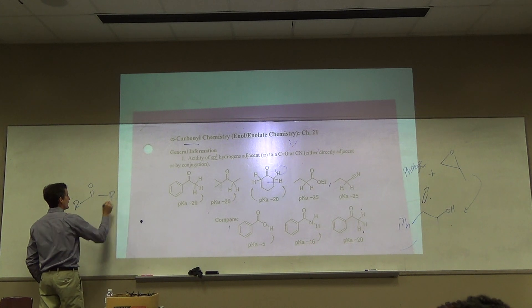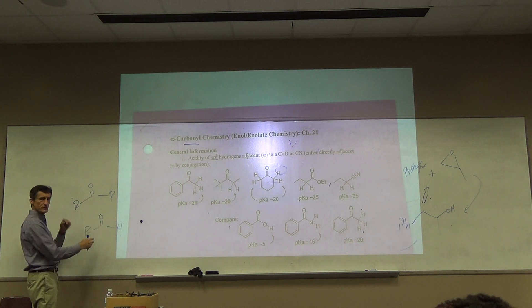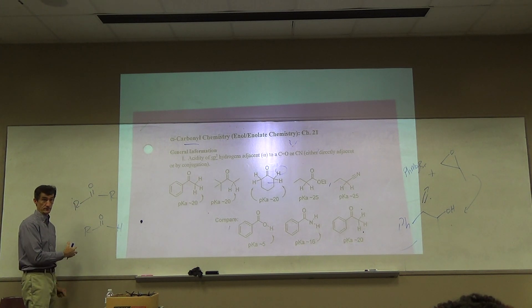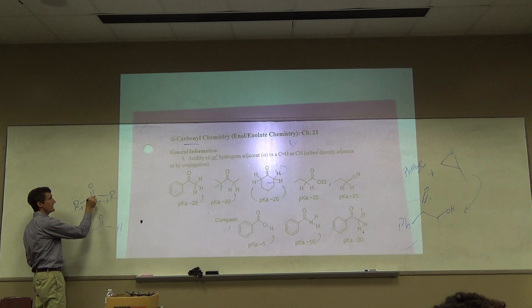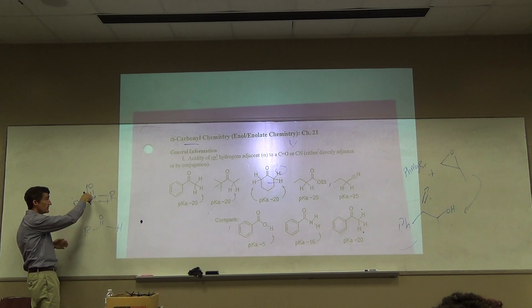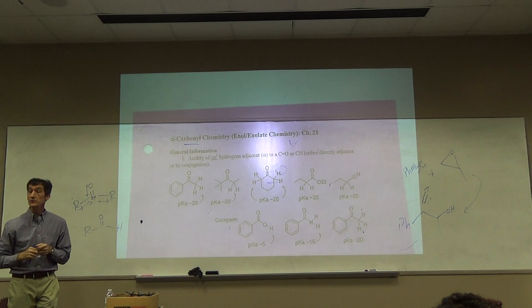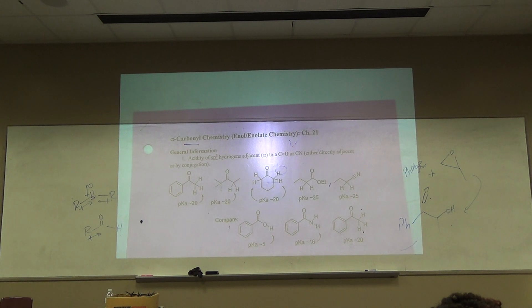Ketones are less reactive. Why is that? At the carbonyl. Why is a... Which carbonyl is going to be more prone to being attacked by a nucleophile? Aldehyde. This has two donating groups. And so any partial positive that is built up here by the dipole is sort of quenched by the donation. That's not totally quenched. This is still electrophilic. It will react with nucleophiles. But down here, you only have one R group donated.